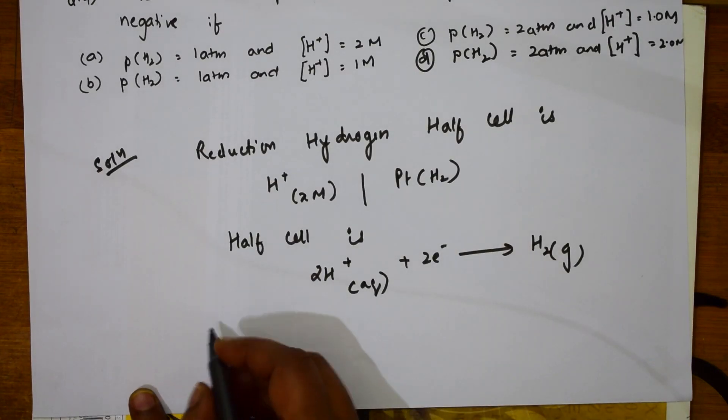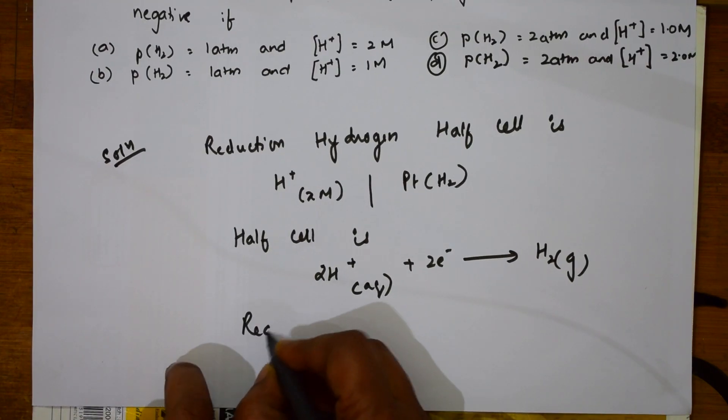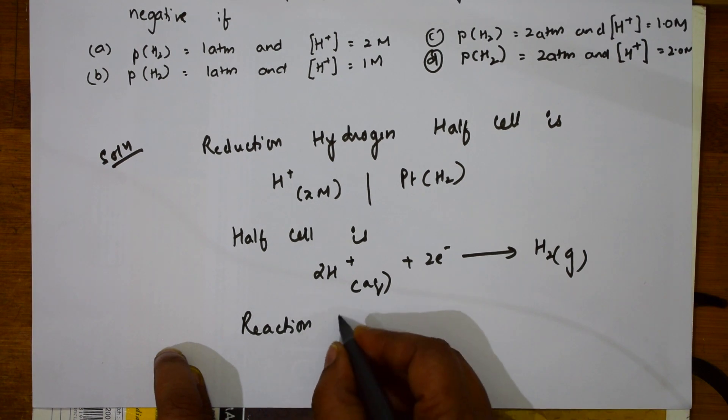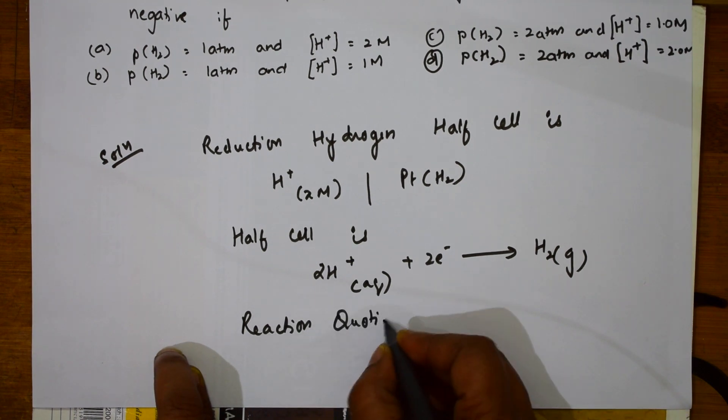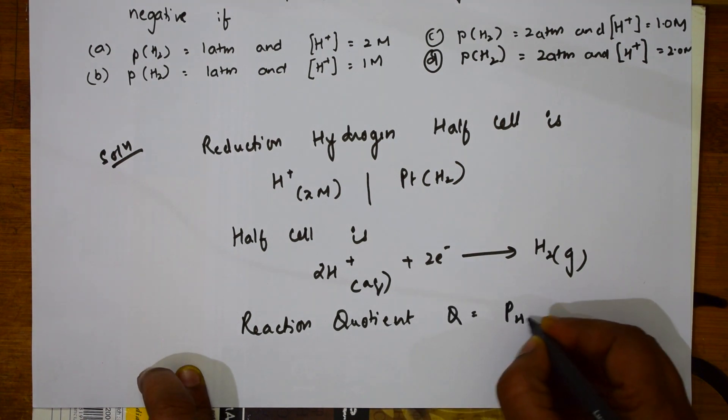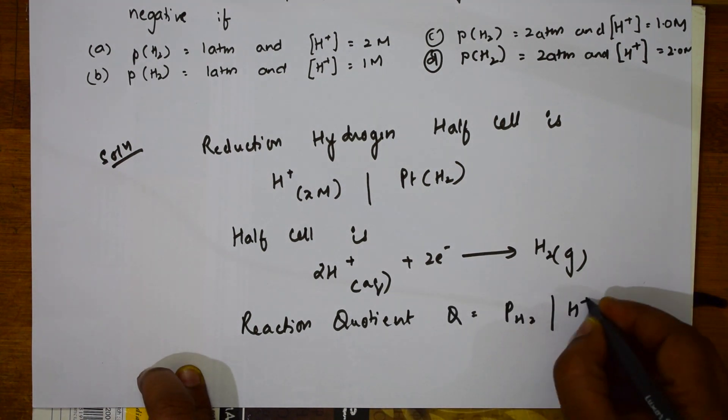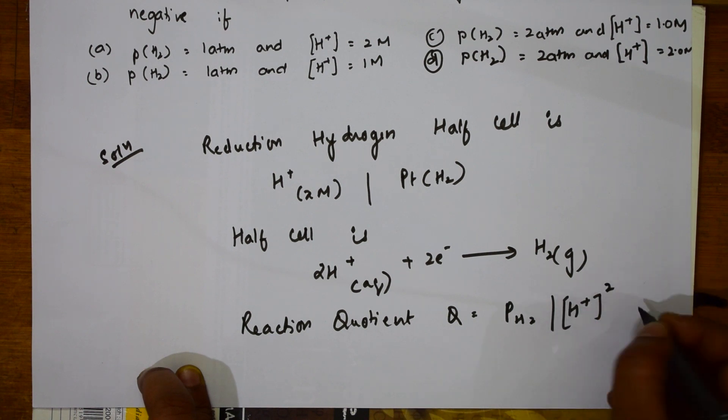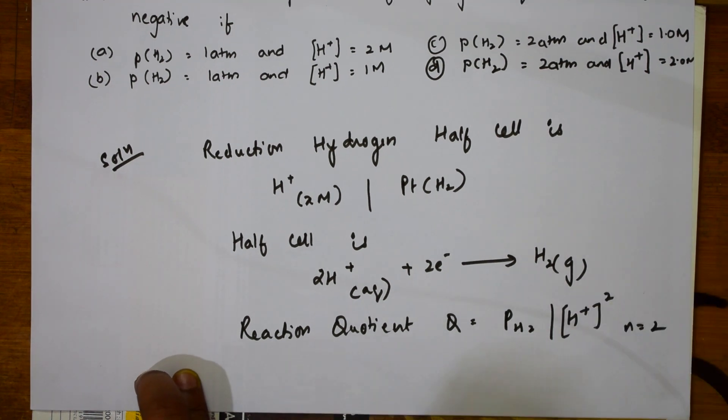Now, I need to find the reaction quotient. Let me write that. Reaction quotient Q. What is this equal to? Q is equal to pressure H2 by H+ squared. Here, N is equal to 2.